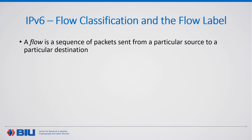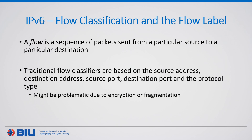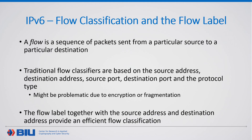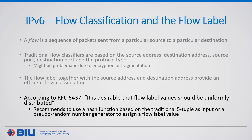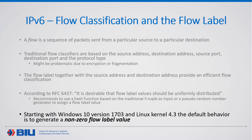A Flow is defined as a sequence of packets sent from a particular source to a particular destination. Flow classification is usually done by forwarding devices such as routers or load distributors, and it is traditionally based on the five-tuple of source address, destination address, source port, destination port, and protocol number. This might be problematic when forwarding devices are not aware of some of the five-tuple fields, for example due to encryption or fragmentation. To overcome this, IPv6 introduced the flow label field, which together with the source and destination address should provide forwarding devices the ability to perform efficient flow classification. The FlowLabel specification RFC recommends that the FlowLabel value should be uniformly distributed and based either on a hash function or a PRNG. Starting with Windows 10 version 1703 and Linux Kernel 4.3, the FlowLabel is populated with non-zero values — in other words, these kernels implement a FlowLabel generation logic.